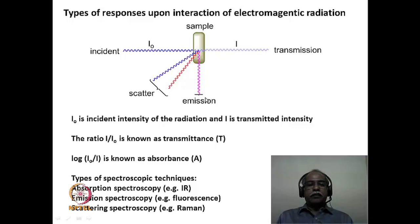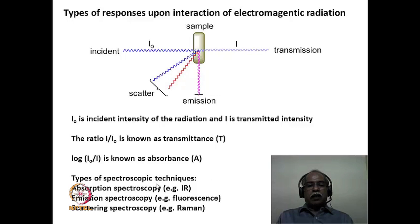Let us define certain terminology used in spectroscopy. The ratio I/I₀ — the intensity of transmitted light to the intensity of the initial light — is known as transmittance, symbol T. The logarithm of I₀/I is known as absorbance, symbol A. Absorbance and transmittance are related: absorbance equals the logarithm of 1/T. The type of spectroscopic technique depends on the phenomenon observed — if absorption is observed, it is absorption spectroscopy; if emission, emission spectroscopy; if scattering, scattering spectroscopy.